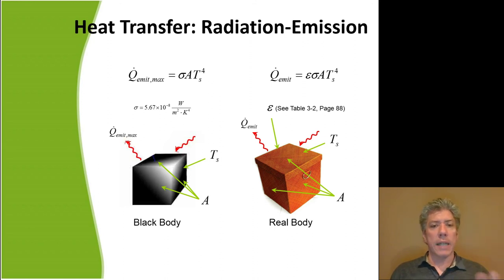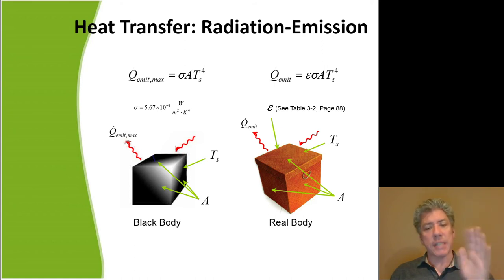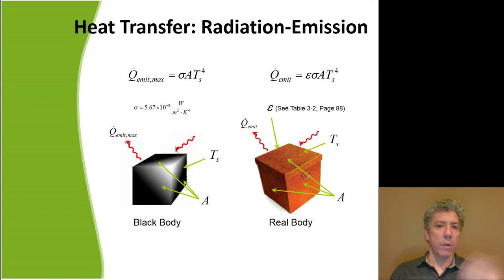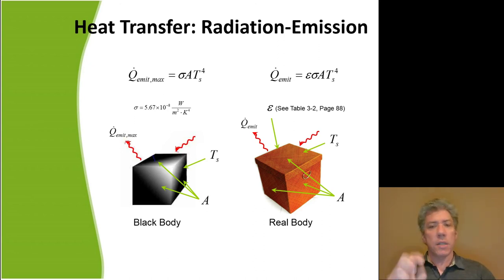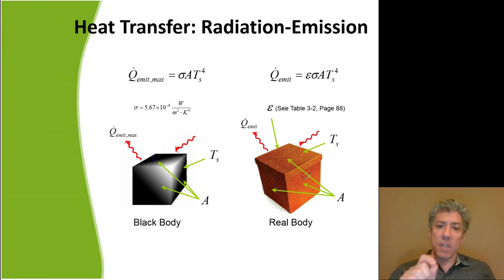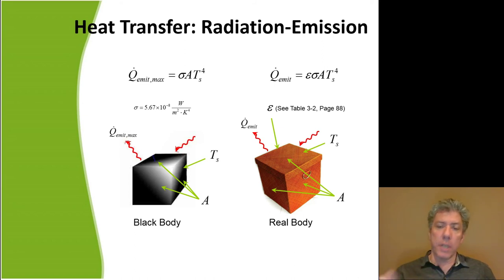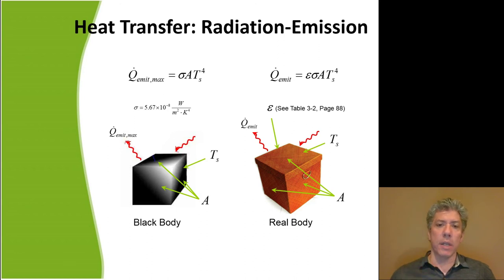Q-dot emitted max equals sigma times A times T_S to the fourth power, where sigma is the Stefan-Boltzmann constant — you should look this up and write it in your conversion factor page — A is the surface area of the body, and T_S is the temperature of that surface. You need to note: that temperature must be in absolute units — not relative temperature, not a temperature difference. This is an absolute temperature and you must use Kelvin or Rankine.